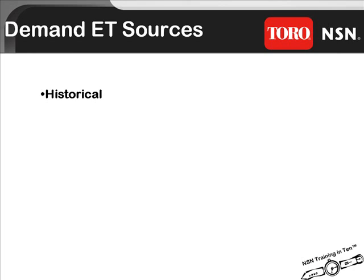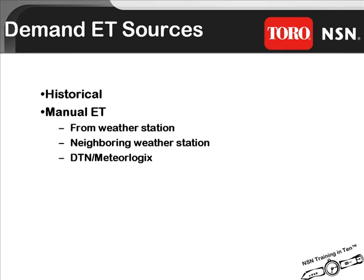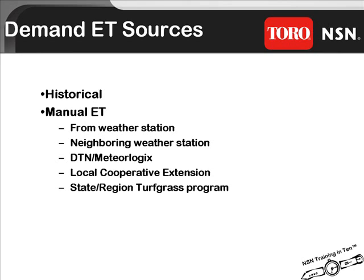SitePro can use a number of different sources to generate or estimate that demand ET. Your SitePro software has the ability to use a historical figure to estimate ET, or you can simply input a number which SitePro calls manual ET. This number can be generated from sources including yours or a neighboring weather station. If you have DTN, you can use the ET value it provides. Your local co-op extension or regional collegiate turfgrass program may also provide daily ET rates for turfgrass on the web, or you can rely on your experience and manually input a daily ET rate.